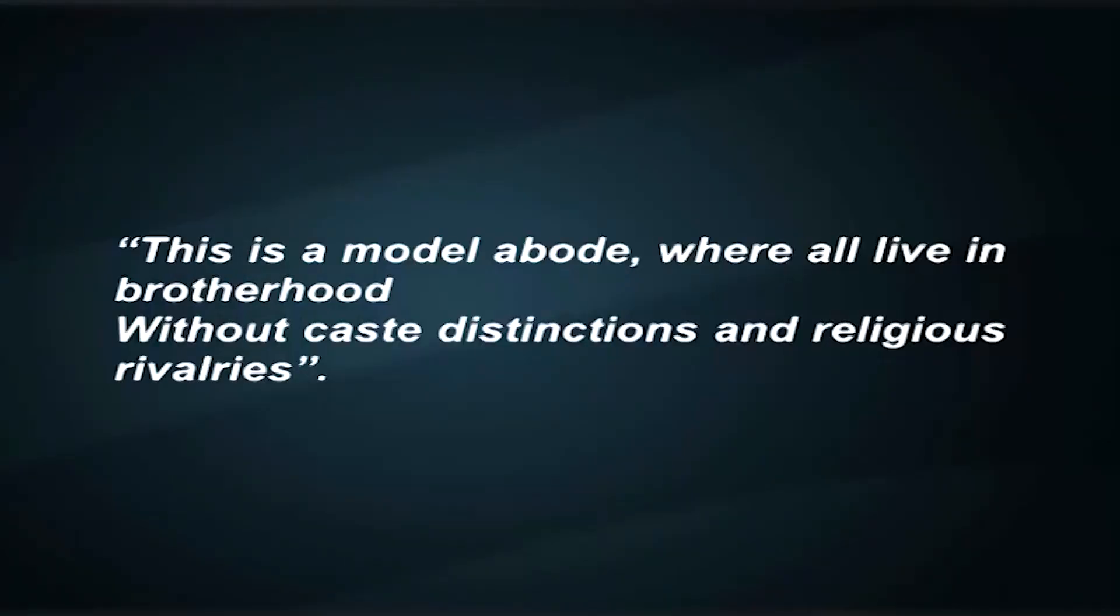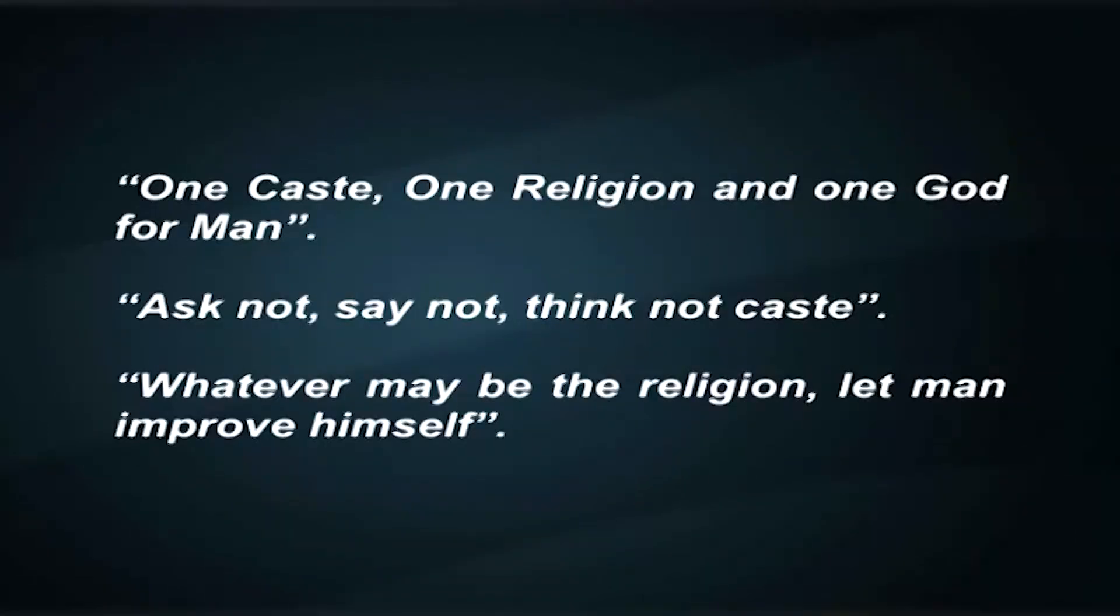The message inscribed therein is: "This is a model abode, where all live in brotherhood without caste distinctions and religious rivalries." Sri Narayana Guru continued to construct and consecrate as many as 60 temples throughout Kerala and in the neighboring states of Tamil Nadu, Karnataka, and in Sri Lanka. They demonstrate Guru's vision in the messages like: "One caste, one religion, and one God for man. Ask not, say not, think not caste. Whatever may be the religion, let man improve himself."